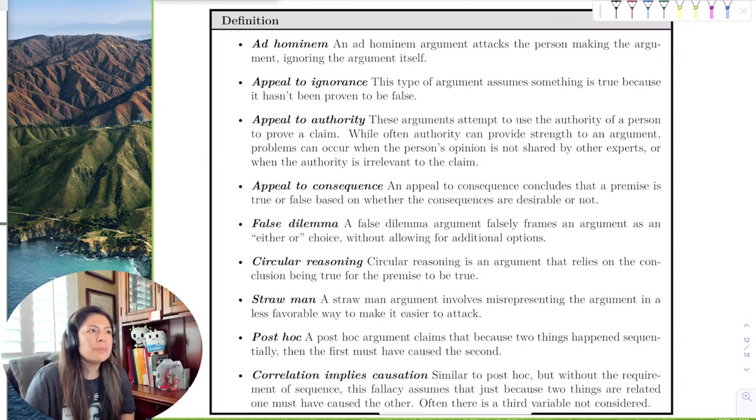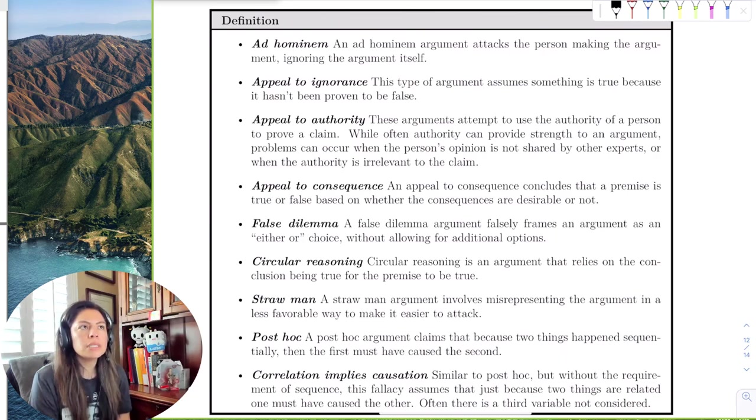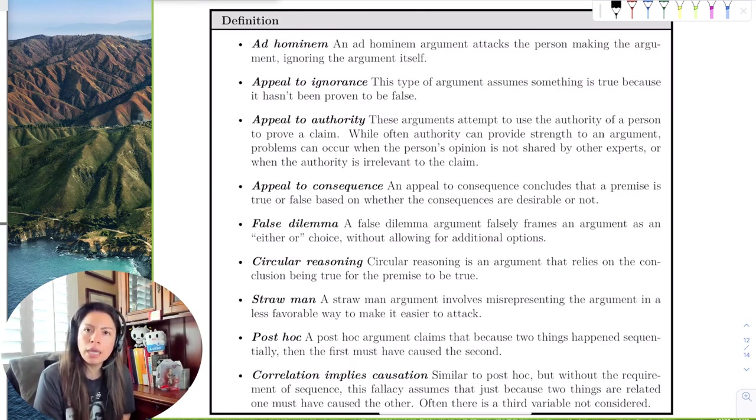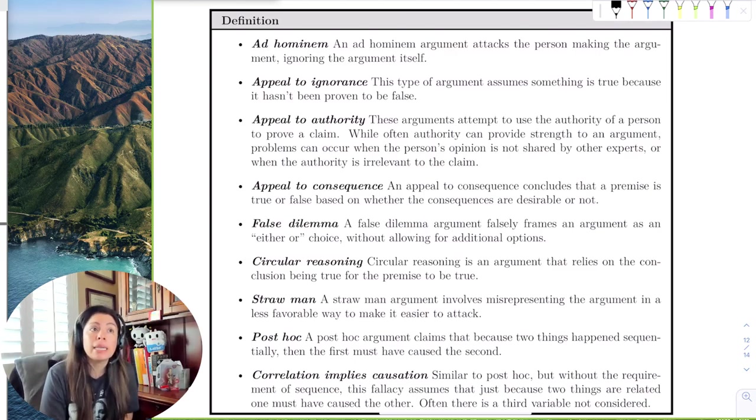So the next one is appeal to authority. These arguments attempt to use the authority of a person to prove a claim. For example, sometimes we can use our authoritative figure to make an argument correct. Like if you were my secretary and I said, I'm a cat, aren't I? Boy, it would be nice to get a raise. And the secretary, yes, you're a cat, you know. So sometimes the appeal to authority sometimes sways people's opinions and whether the argument is valid or not.